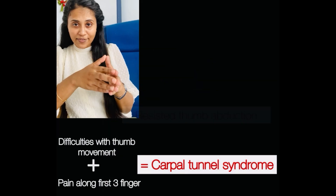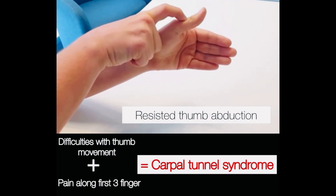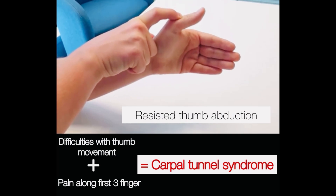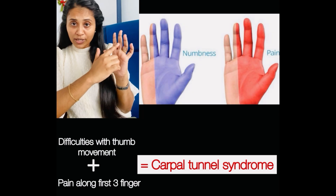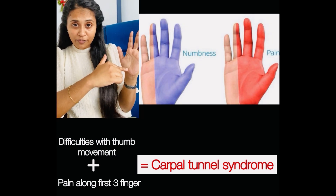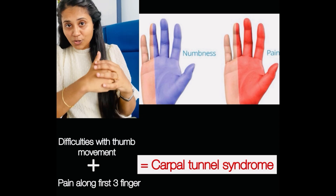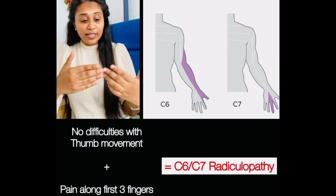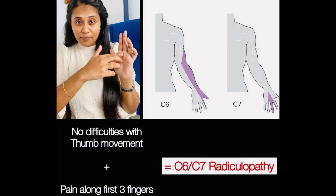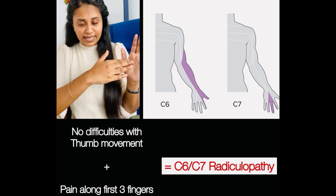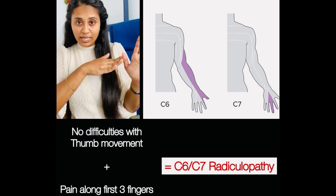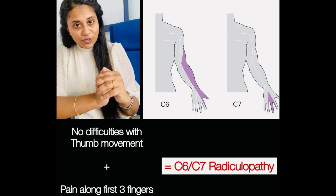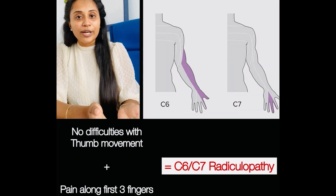If a person has difficulty with thumb abduction — moving the thumb away from the other fingers — plus pain, tingling, or numbness on the first three fingers, they are more likely to have carpal tunnel syndrome. On the other hand, if a person has pain, tingling, and numbness on the first three fingers but does not have much trouble with thumb movement, they are more likely to have C6/C7 radiculopathy.